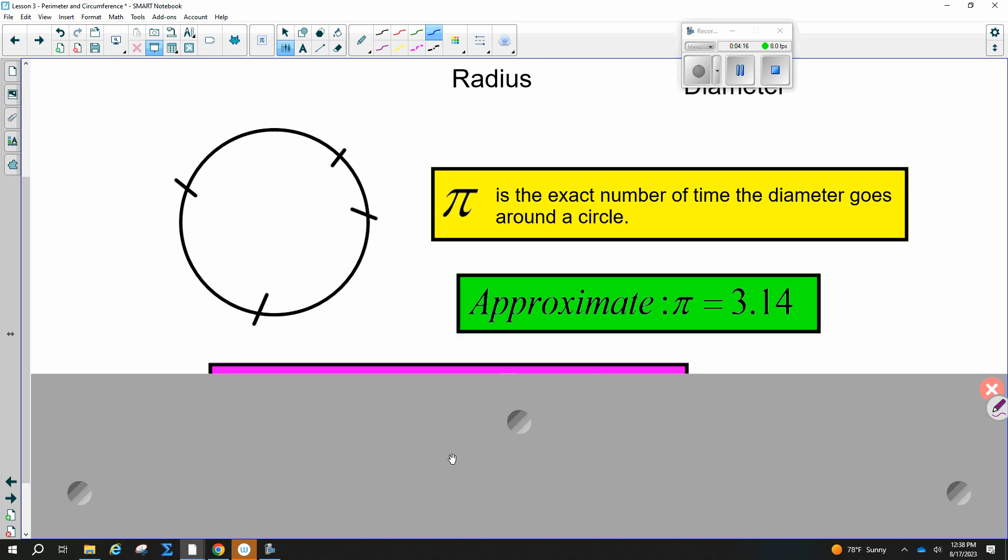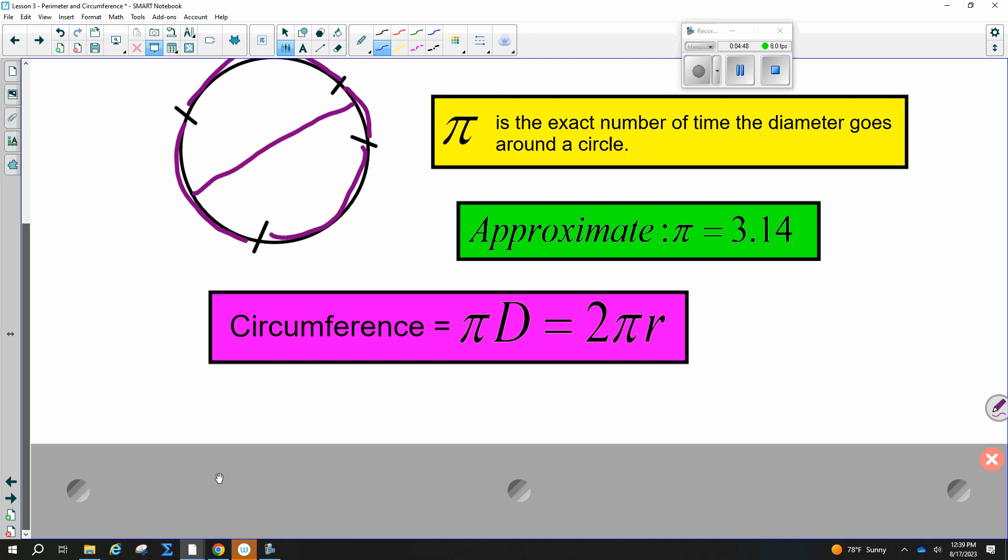So where does pi come from, in case you wanted to know? It's actually the exact number of times the diameter goes around the circle. So let's say I took a piece of string and I wrapped it one, two, three point one four times. If you were to take the diameter and measure it and actually take it around the circle, it will always be in that same ratio, three point one four times around. That's where pi comes from. Our formula for circumference is you can use 2πr or πd. Two pi r or d pi.